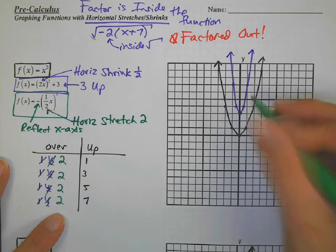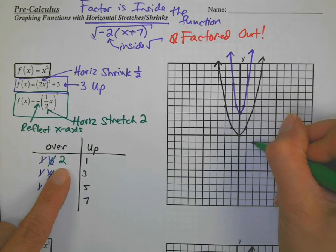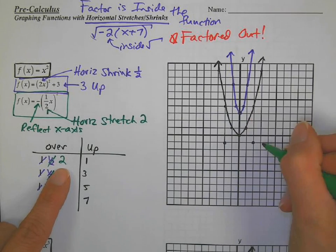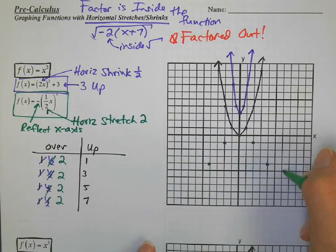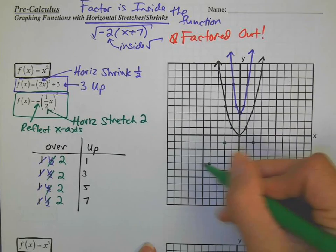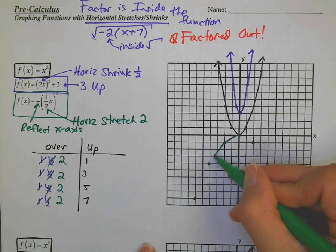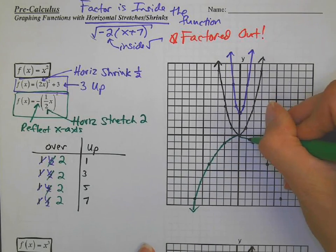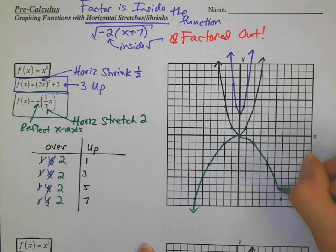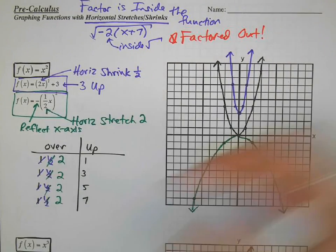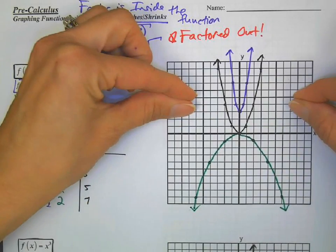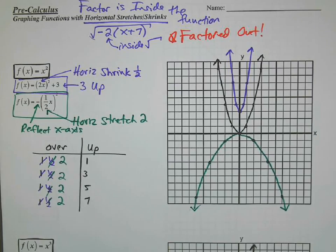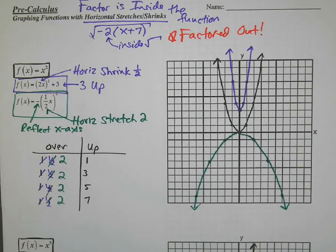Okay, a parabola opening down. We go over two, down one. Over two, down three. Over two, down five. Here's what the parabola's going to look like when it's reflected over the x-axis and horizontally stretched. Can you imagine grabbing this parabola and stretching them horizontally? He'd get really wide. Everything else is the same as yesterday. Draw the growth chart and affect the over numbers for horizontal.